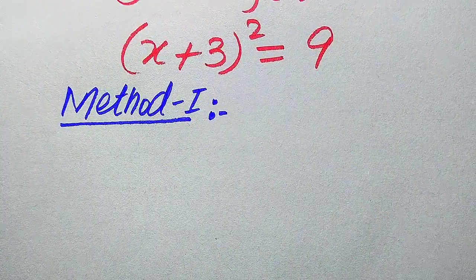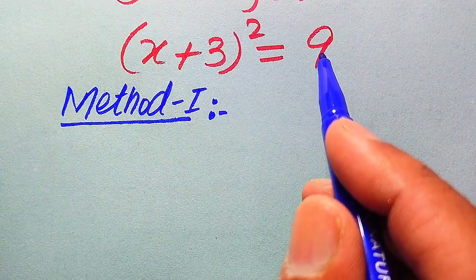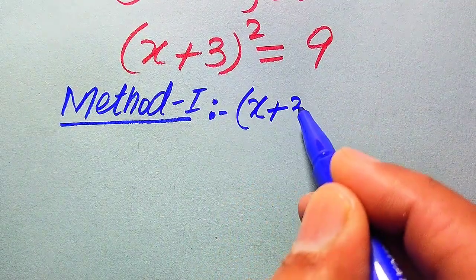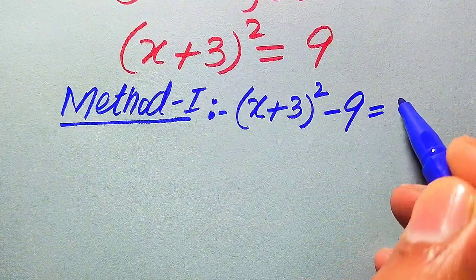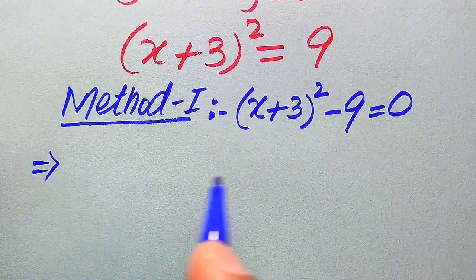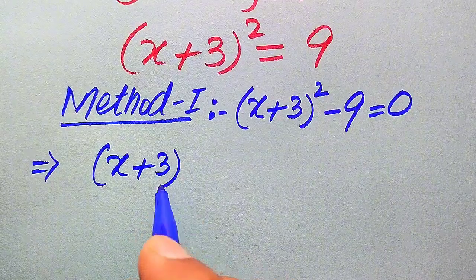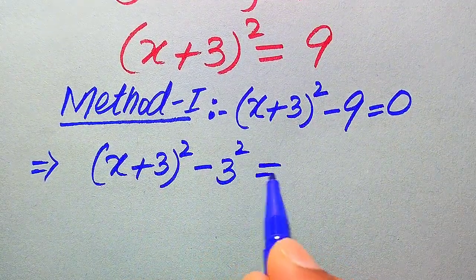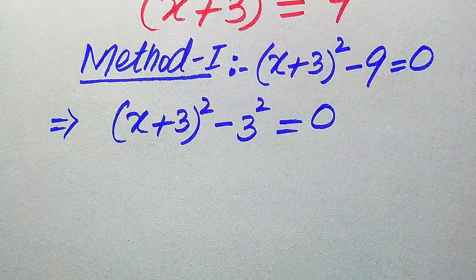Now we move towards our first method. In the first method, we just move this 9 from the right hand side to the left hand side, so it will be written as (x + 3)² — when we move the positive 9 to the left hand side it becomes negative. We rewrite this equation as (x + 3)² minus 9, and we write this 9 as 3², so the whole equation equals 0.